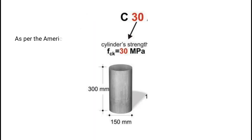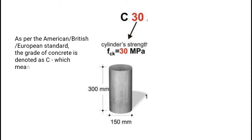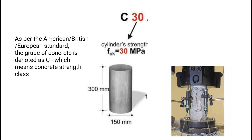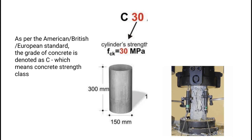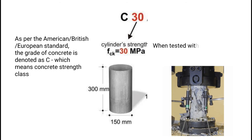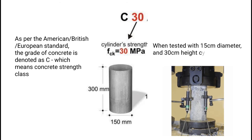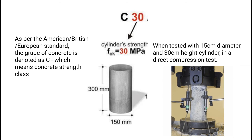The grade of concrete is denoted as C, which means concrete strength class. The number behind C refers to the characteristic compressive strength of concrete in newton per millimetre square at 28 days, when tested with a 15 centimetres diameter and 30 centimetres height cylinder in a direct compression test.